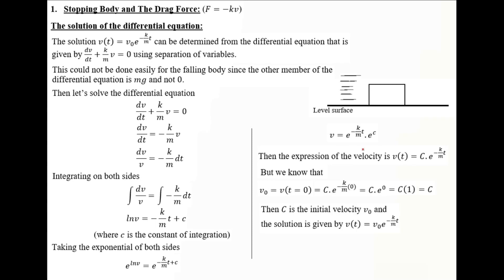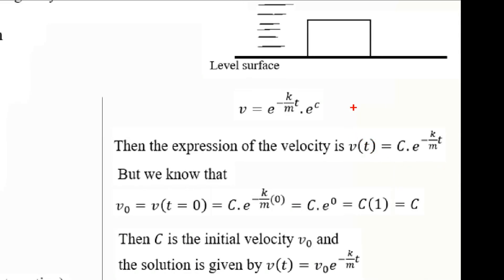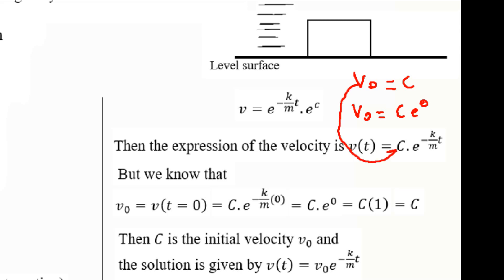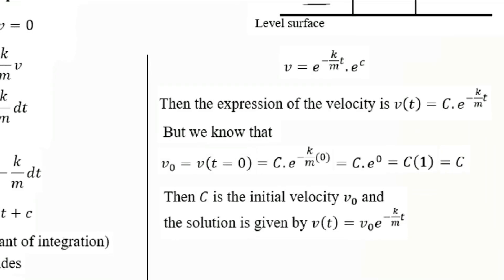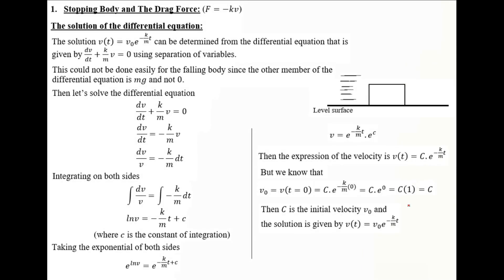Replacing T by 0, we get V0 equals C times e to the power 0, which means the constant C equals V0. We substitute it back, and the solution is confirmed: V equals V0 times e to the power minus K over M times T.